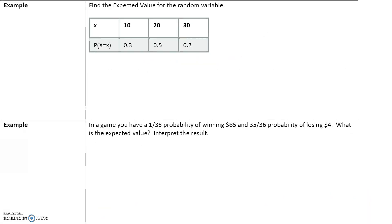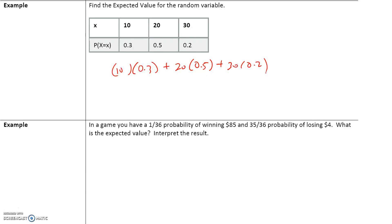Let's look at another example. Let's find the expected value for this random variable. The expected value is the first numerical value times its probability, plus the second numerical value times its probability, plus the third numerical value times its probability. So the mean, or the expected value, is equal to 19.